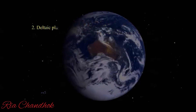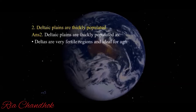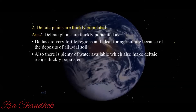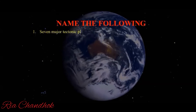Next reason: deltaic plains are thickly populated. Deltaic plains are thickly populated because deltas are very fertile regions, ideal for agriculture due to deposits of alluvial soil. Also, in deltaic plains there is plenty of water available, which also makes them thickly populated.